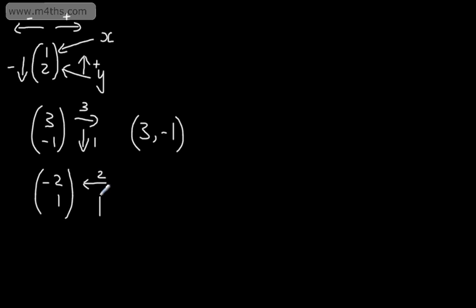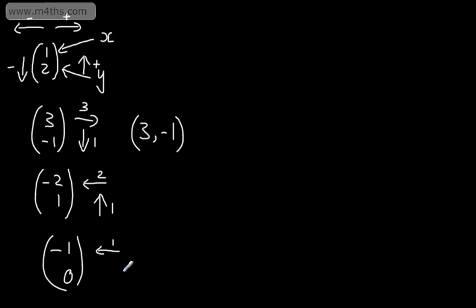If I had, for example, the vector (-1, 0), this is telling me that I'm going to go left by 1 and we're not going to move in the vertical direction at all — so it's going to stay where it is in terms of the y-coordinate. What we're going to do in the video is look at translating a shape given a translation, and then look at describing a translation given the shape and where it's mapped to.